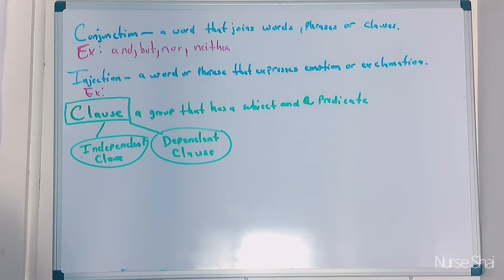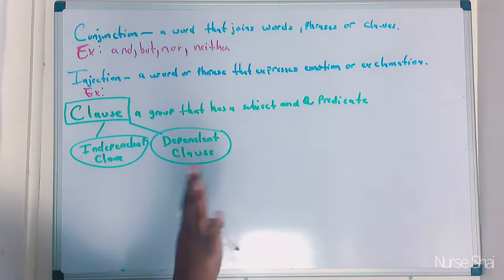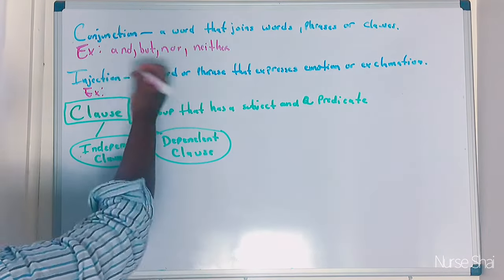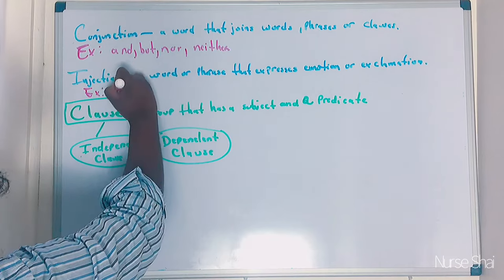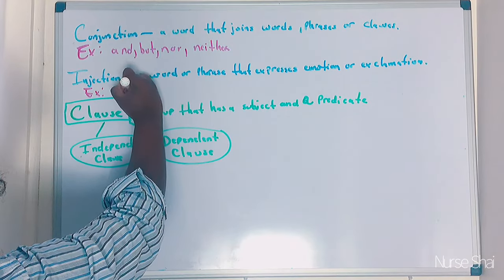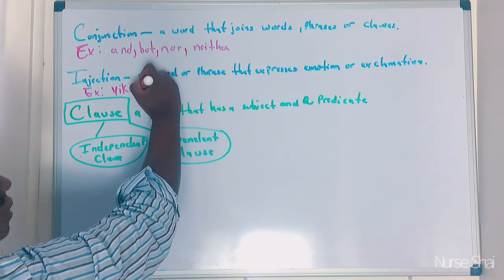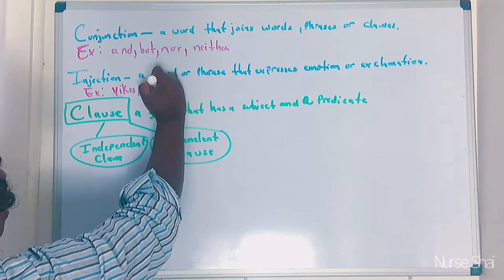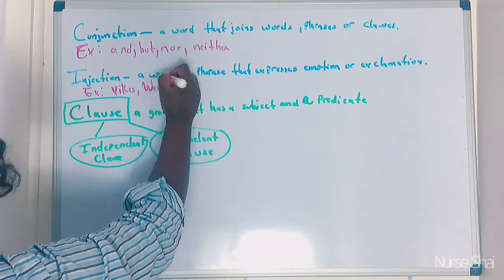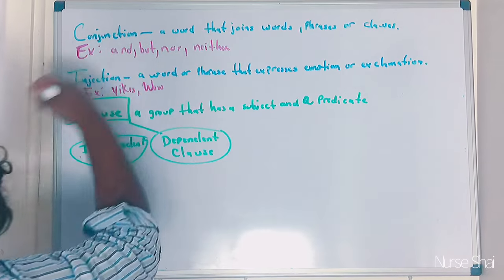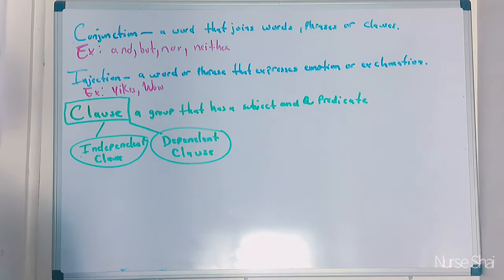An interjection is a word or phrase that expresses emotions or exclamation. Words like 'yikes,' 'wow' — words like that. When you see 'wow,' it's usually written with an exclamation mark.